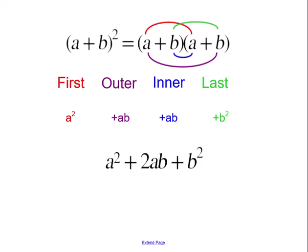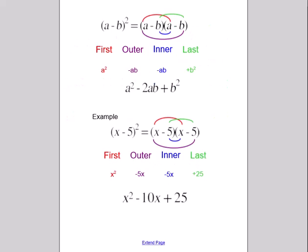When simplified, we get a² + 2ab + b². Now let's apply the same concept to (a - b)².